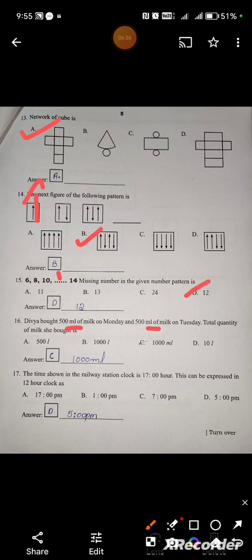Divya bought 500 ml of milk on Monday and 500 ml of milk on Tuesday. Total quantity of milk she bought is? Total means addition: 500 plus 500 equals 1000 ml. The option is C. The time shown in the railway station clock is 17 hours. Convert to 12 hour clock: 17 hours is 5 pm.